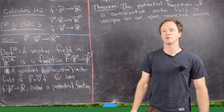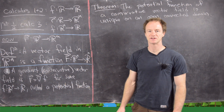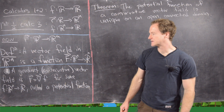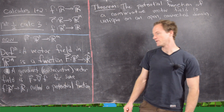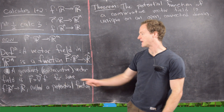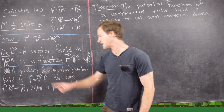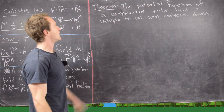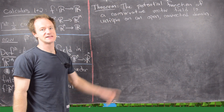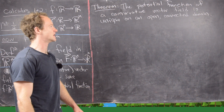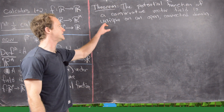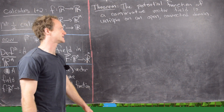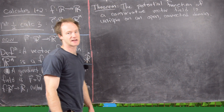In a previous video we looked at some graphical representations of these things; we're not going to do that here. The next thing is that a gradient or conservative vector field is one that is produced by taking the gradient of a multivariable function. I want to start this video with the following theorem: the potential function of a conservative vector field is unique — more precisely, unique up to a constant on an open connected domain.